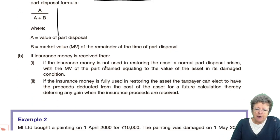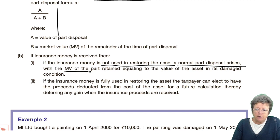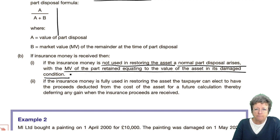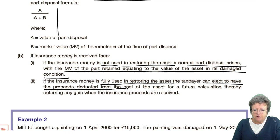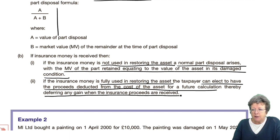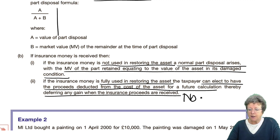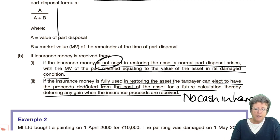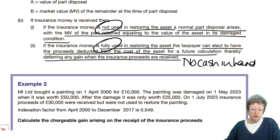If the money is received and it is not used to restore the asset, then you have a normal part disposal, with the market value of the part retained equating to the value of the asset in its damaged state. If the insurance money is fully used to restore the asset, then you can elect to have the proceeds deducted from the cost of the asset for a future calculation, thereby deferring any gain when the insurance money is received. So we've got two situations depending on whether you put the money back in or not.